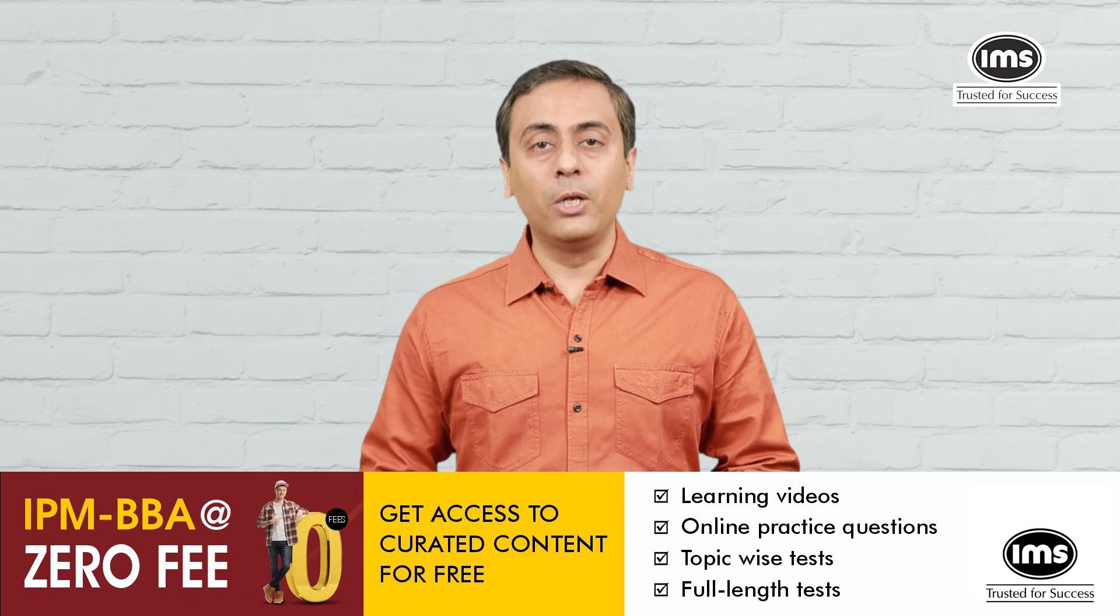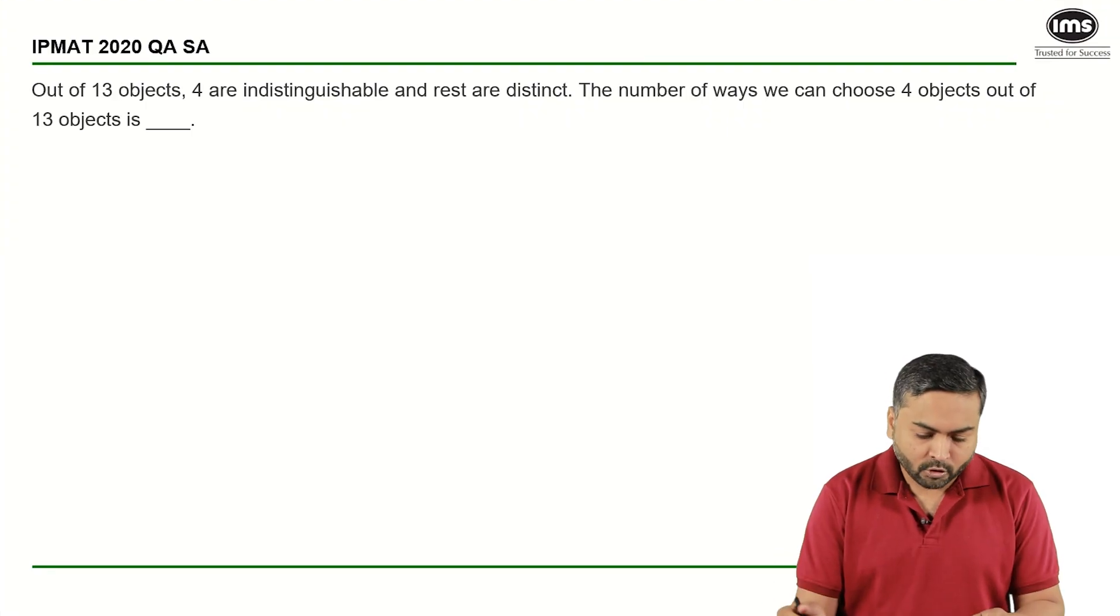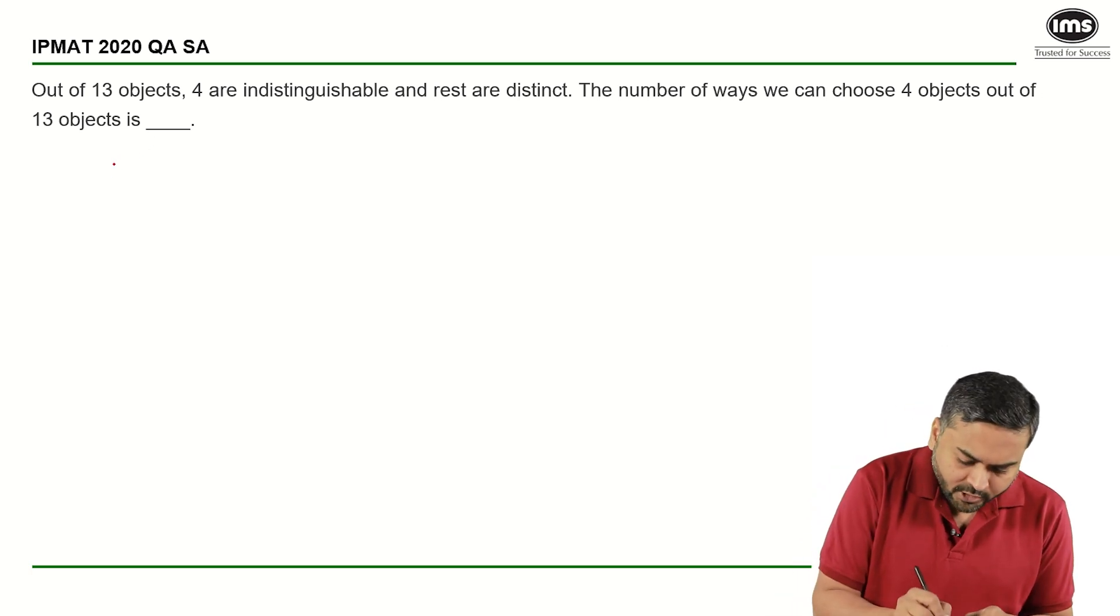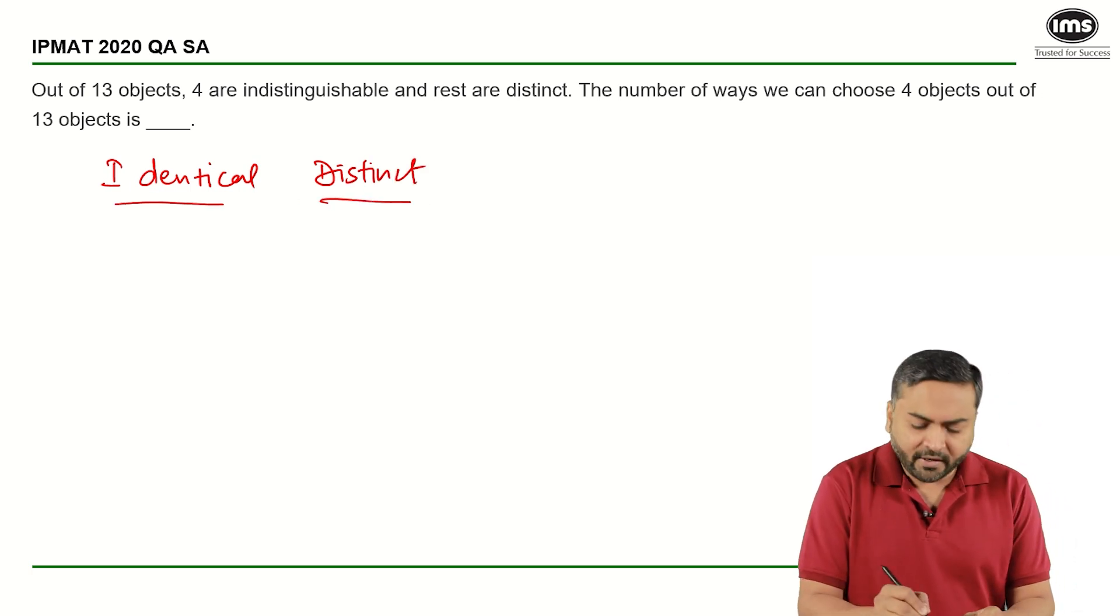Okay, so let's start. Basically, out of 13 I need to select 4. And there are 4 identical objects, 4 indistinguishable, so I have identical and I have distinct.